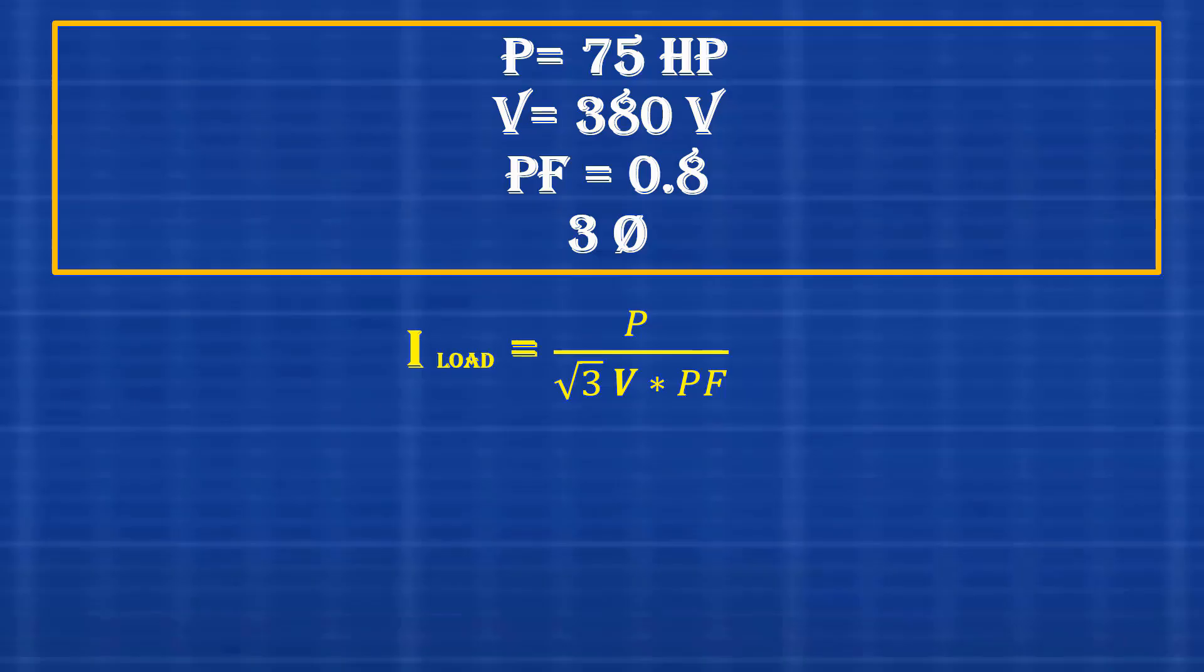The formula is load current equals power divided by square root of 3 multiplied by voltage multiplied by power factor. However, note that power must be in watts or kilowatts. Since it is given in horsepower, we need to convert it.